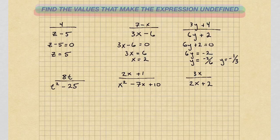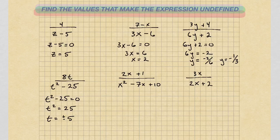Next problem, we have 8t divided by t squared minus 25. So we're going to say t squared minus 25 equals 0, and t squared equals 25 by adding 25 to both sides. Taking the square root, we have t equals plus or minus 5. Remember, if we introduce a square root to both sides, we have to include both positive and negative. That's the step where we introduced the square root, so we include both positive and negative numbers.